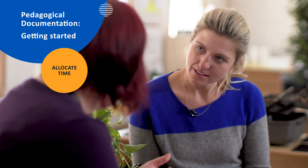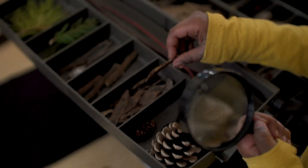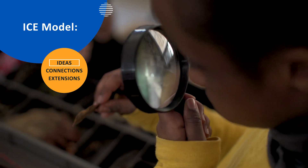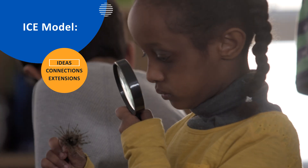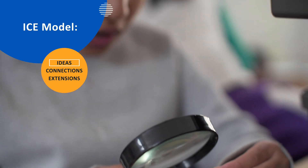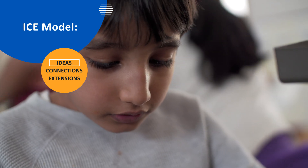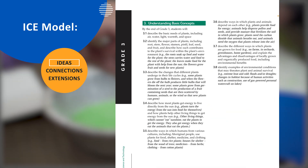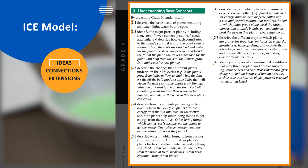Katie has allocated two minutes each day for documentation. Later, she will review her documentation with students or other educators, and together they add notes and captions. Katie uses the ICE model to classify qualitative observations and to meet students where they're at. ICE can also be used to classify qualitative observations into a rubric. Idea verbs are easily found in the Ontario science and technology curriculum.